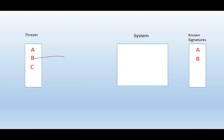So if threat B were to be used again, it will be introduced into the system. The system will compare it with previously known signatures: B will be compared with A — they're different. B will be compared with B — they're the same. The system will realize this is something it has seen before and that threat B is malicious, so it will quarantine it, and threat B will not be able to run its code.